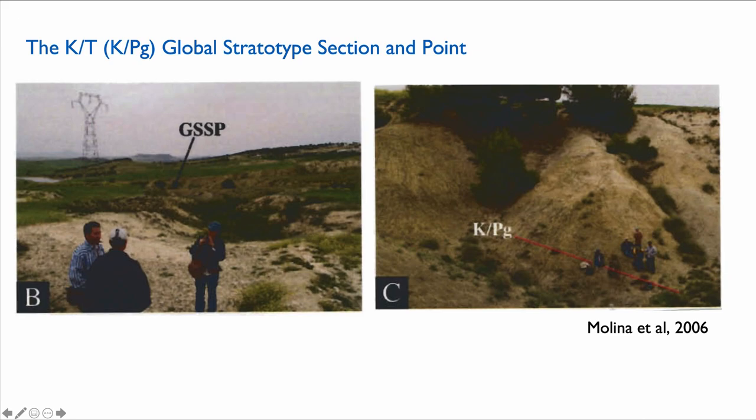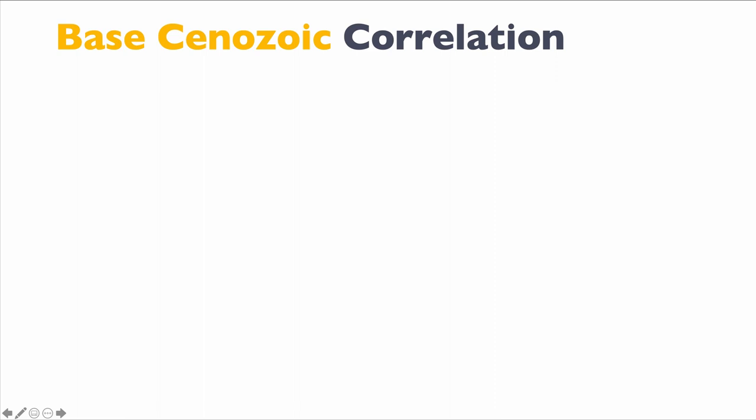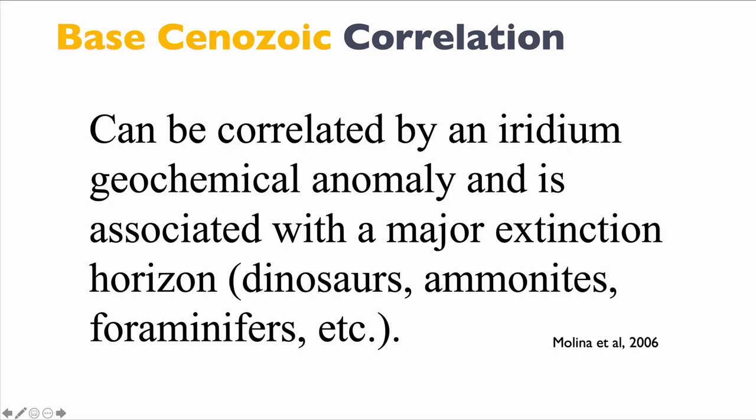Actually, the definition of the section itself is not really what matters. The section defines where you want to go to find criteria for correlation, and it's really the correlations that are important. If you read the article by Molina et al. 2006, it says this GSSP can be correlated by an iridium geochemical anomaly and is associated with a major extinction horizon of dinosaurs, ammonites, forams, etc. So the definition of a GSSP is lithostratigraphic because lithostratigraphy is what's easy to spot in the field. If I go to El Kef with the definition of this red layer, I know exactly where to look for the base of the Cenozoic. But the value of that GSSP is in the tools it offers as a stratigraphers for wider correlation.